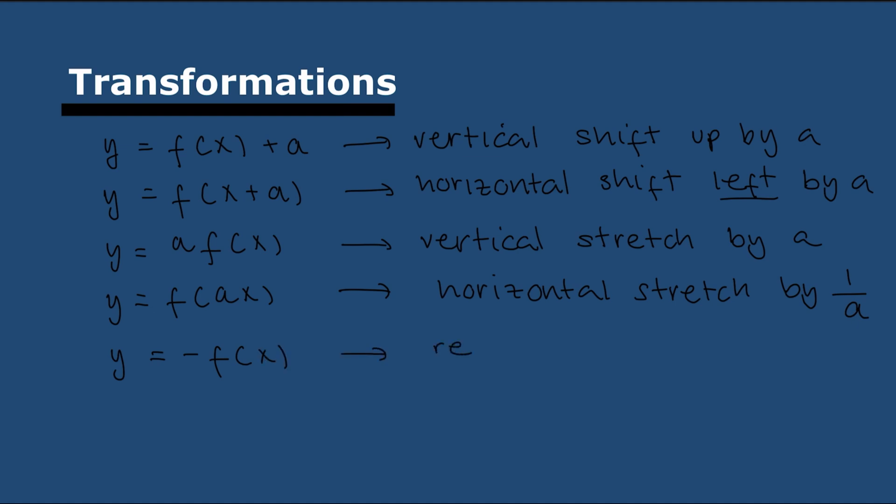And then we have the reflections. So if we have y = -f(x), that means that all the y's are shifting. So it's actually a reflection on the x-axis. On the other hand, if we have y = f(-x), all the x's are changing sign. So now it's a reflection on the y-axis. That's all you need to know. Remember all of these. It's vital.